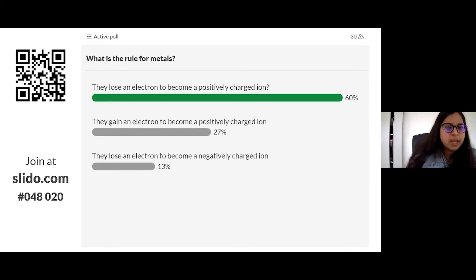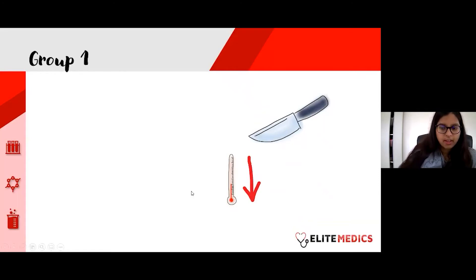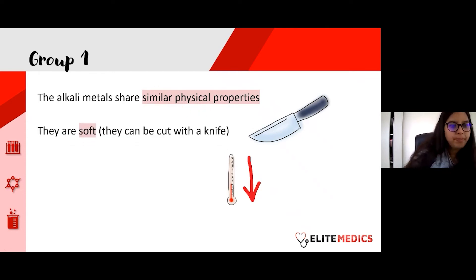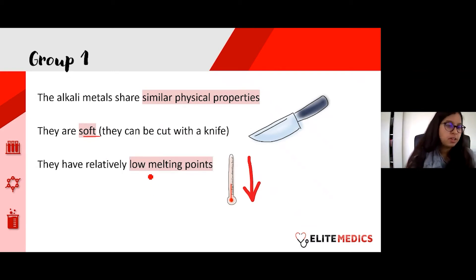Correct — metals lose an electron to become a positively charged ion. Group one alkali metals all share similar physical properties: they are soft and can actually be cut with a knife, which is surprising for a metal. They also have relatively low melting points and low density.